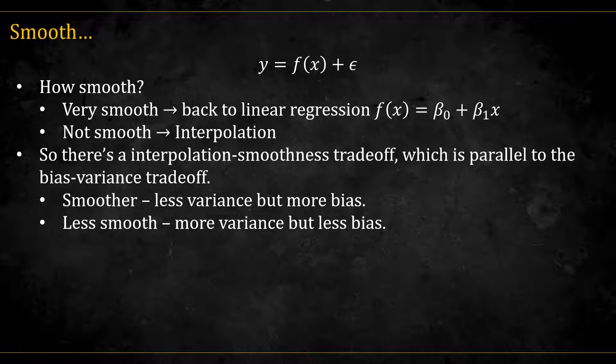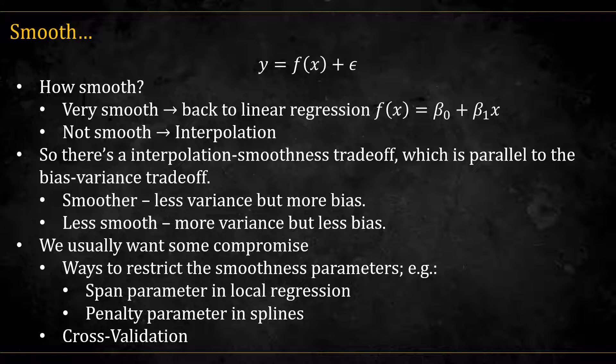The smoother function has lower variance, but higher bias, and the less smooth you go, the more the variance increases, but the bias gets smaller. So we usually want some compromise between the two, and the balance is achieved by restricting some smoothness parameter.